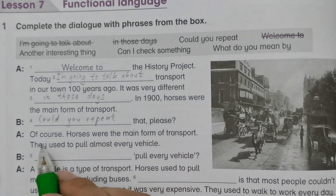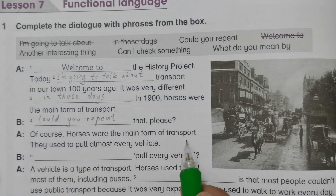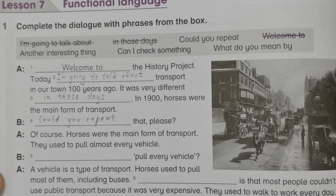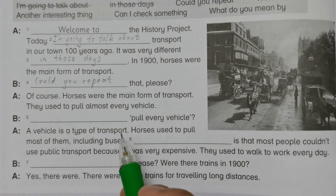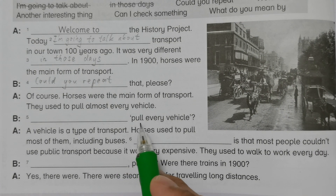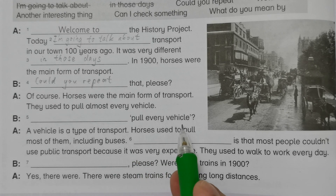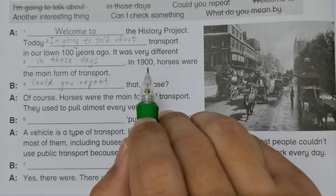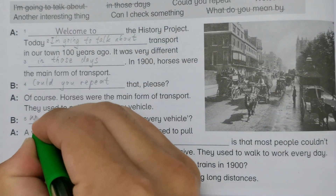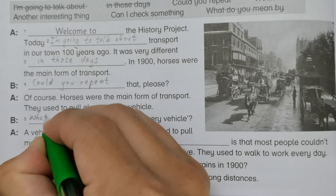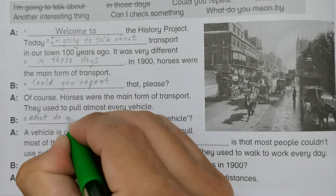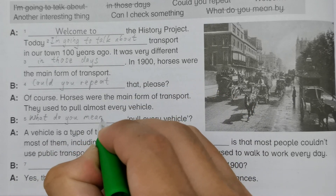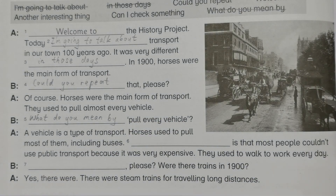Repeat that, please. Of course, horses were the main form of transport. They used to pull almost every vehicle. And then B stated as: what do you mean by pull every vehicle? So: what do you mean by pull every vehicle?